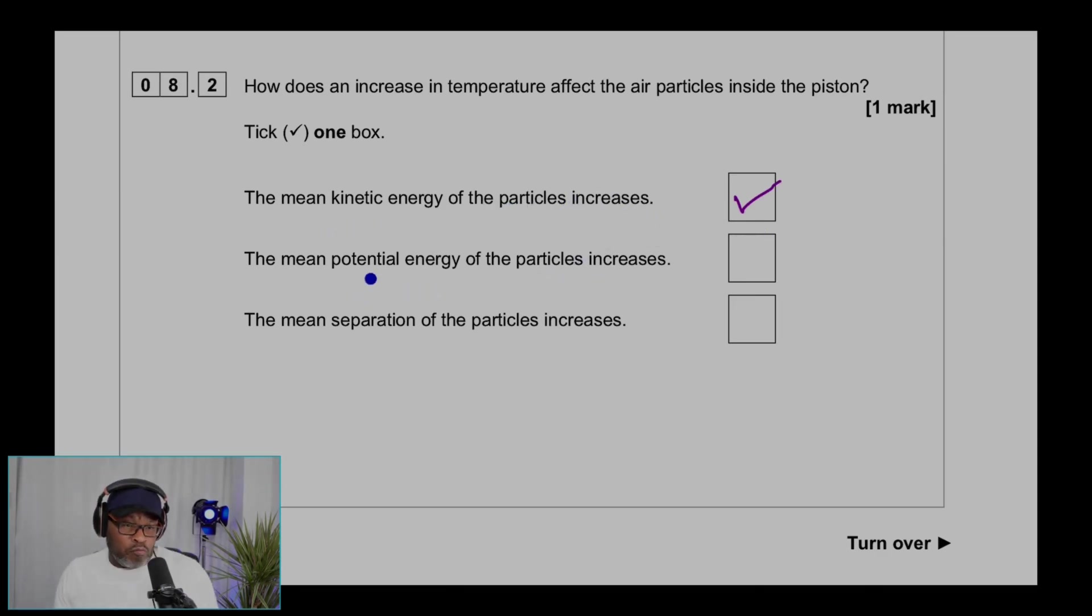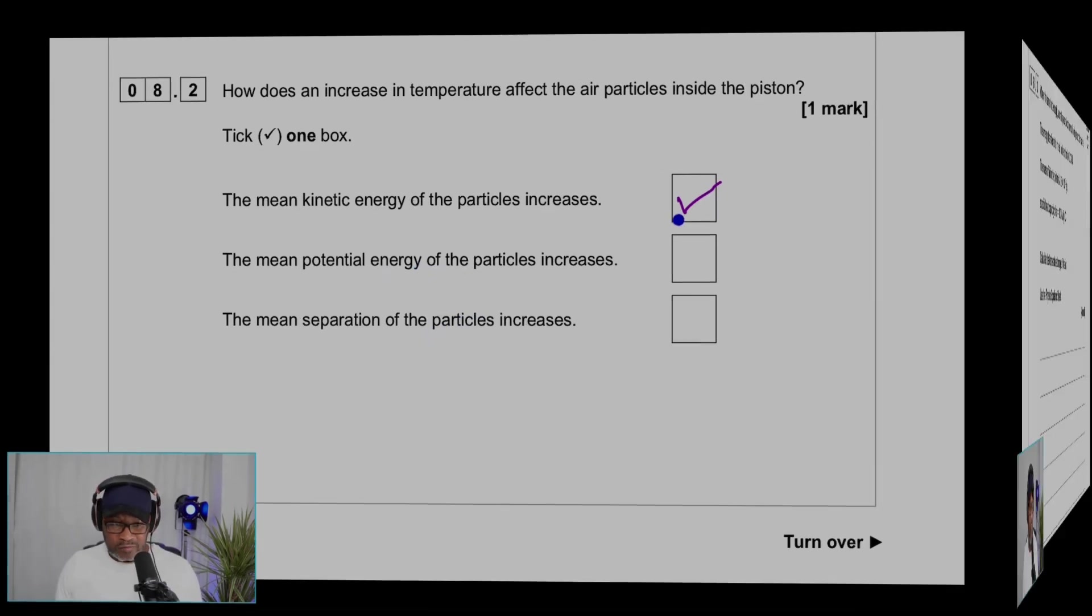Because if you push them together, potential energy - that means position between two particles. If they're further from each other, potential energy will increase. If the two particles are closer, potential energy will decrease. So if you push them in, the particles will be closer. Therefore, potential energy will decrease, not increase. And the mean separation of the particle, which is basically the potential energy as well, because separation will decrease. So it's going to be A.